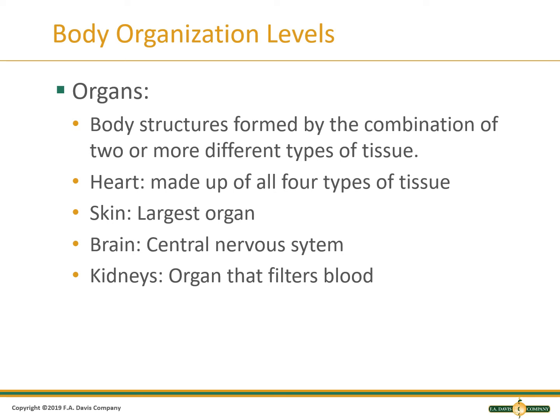Organs are body structures formed by the combination of two or more different types of tissue. For example, the heart is made of all four types of tissue. Each organ is a specialized component of the body and accomplishes a specific function. The skin is the largest organ. The brain is the command center of the central nervous system, and the kidneys filter your blood to maintain body pH and level of hydration.